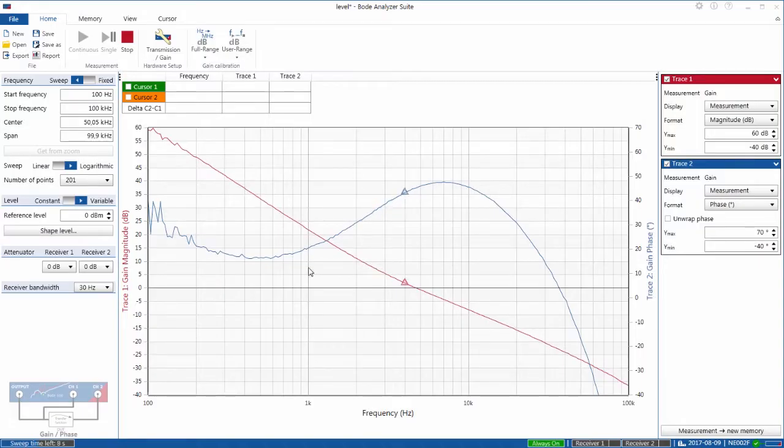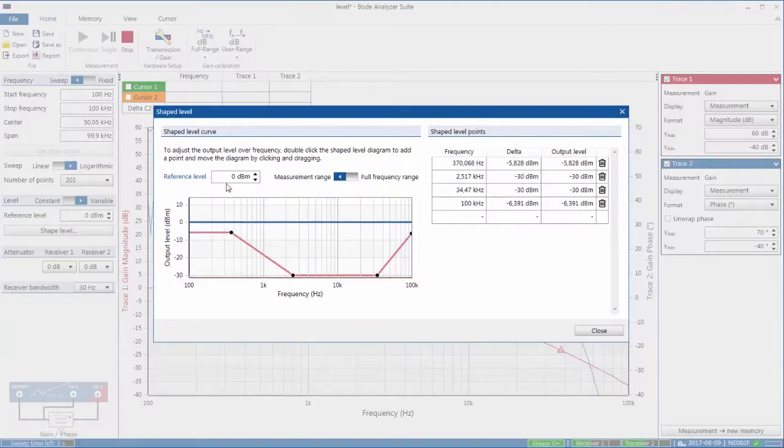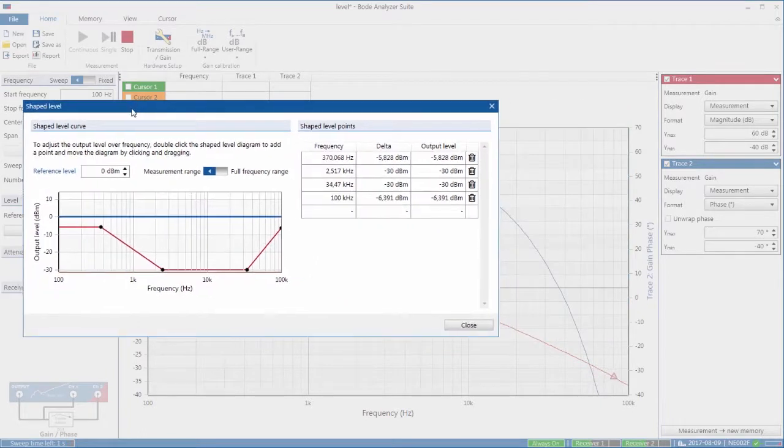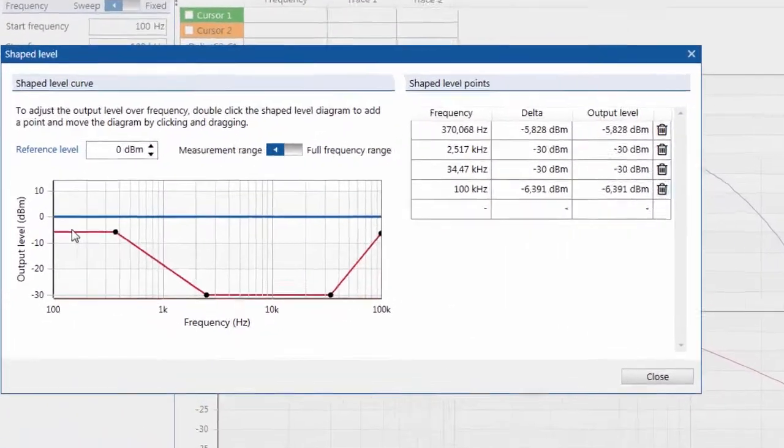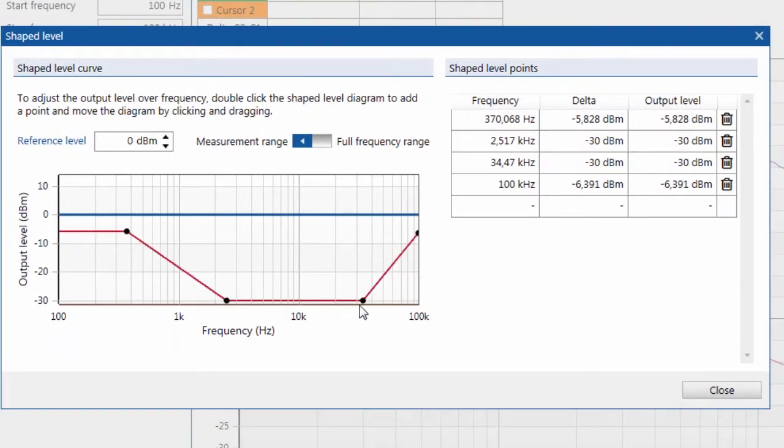So here you see the Bode plot of the power supply that we talked about earlier. If I press the shaped level button you can see the profile that I created earlier on the board. So I start with a large signal at low frequencies, then I reduce the amplitude of the signal, and then I inject a small signal at mid frequencies, and then I increase it again.